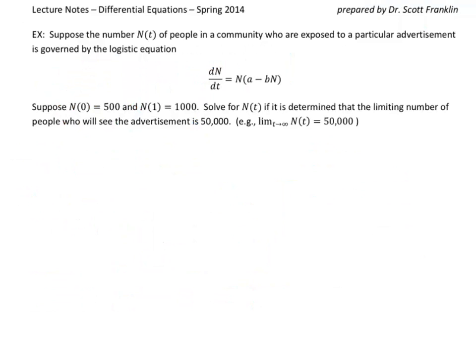All right, so our next example asks us to suppose that the number of people n of t in a community who are exposed to a particular advertisement is governed by this logistic equation. Notice how this is exactly the same model as what we did when we derived the solution. And we know that n of 0 is 500, n of 1 is 1,000, and so we want to find n of t with this additional piece of information. By the way, I think I should comment here, you have two parameters of freedom to make this model match reality.